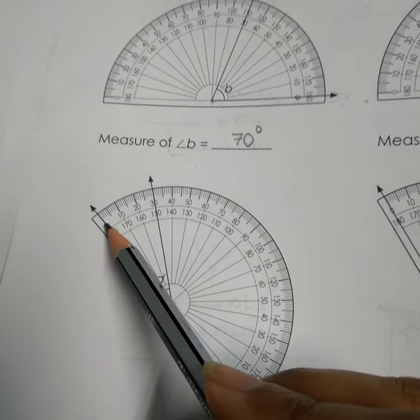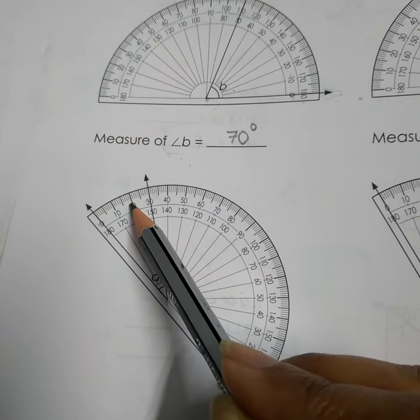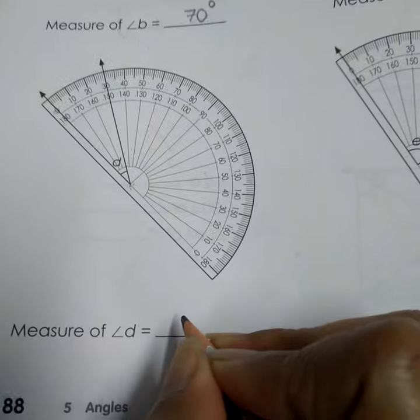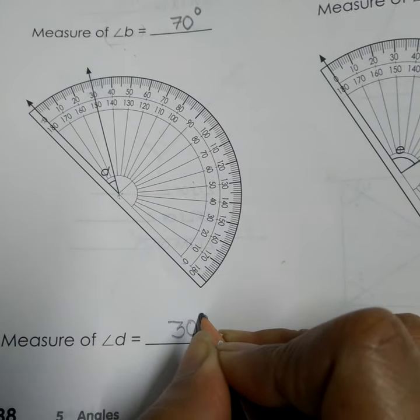We will start from zero: 0, 10, 20, 30. So this is 30 degrees. Here I will write 30 degrees.